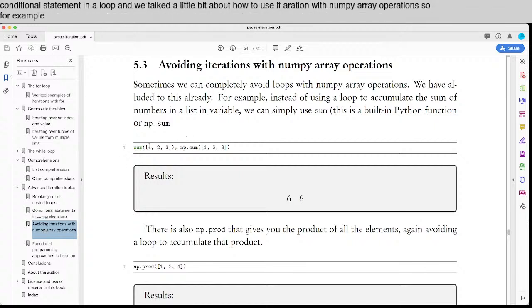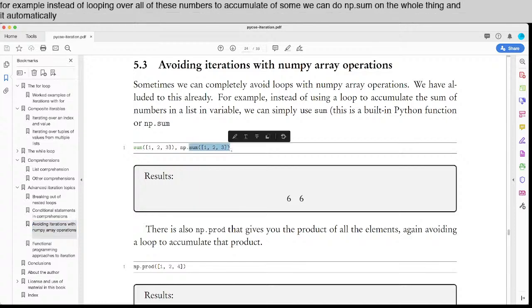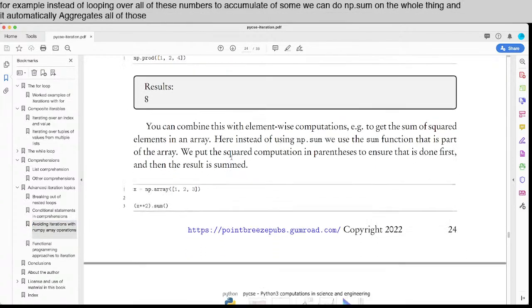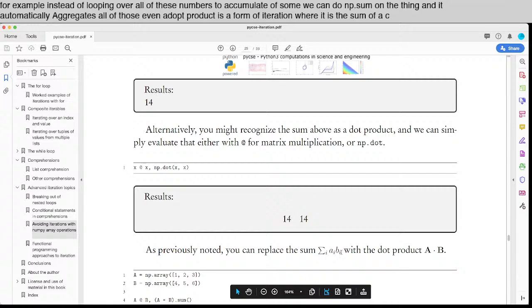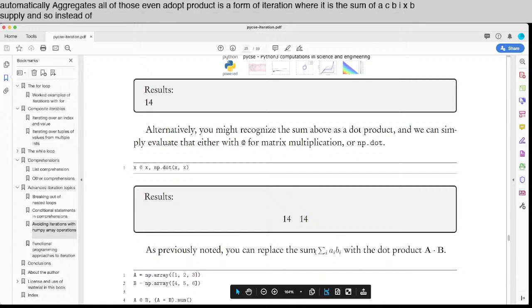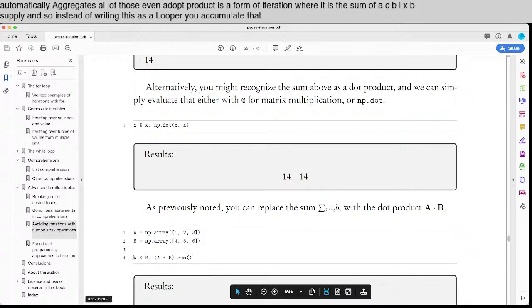So for example, instead of looping over all of these numbers to accumulate a sum, we can do np.sum on the whole thing, and it automatically aggregates all of those. Even a dot product is a form of iteration where it is the sum of a sub i times b sub i. And so instead of writing this as a loop where you accumulate that, we can just literally do a dot product and avoid it.